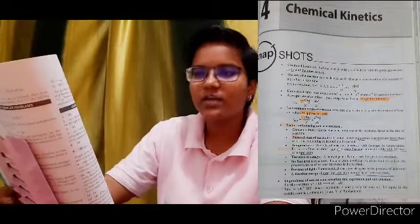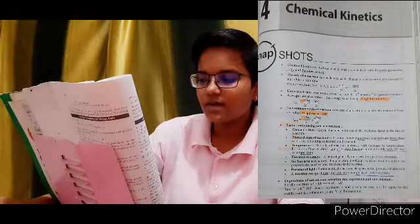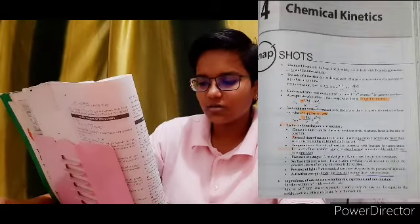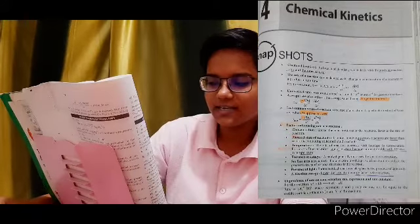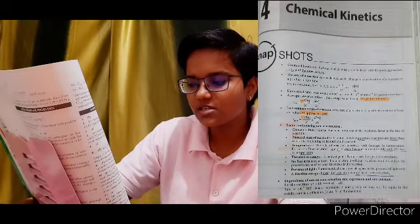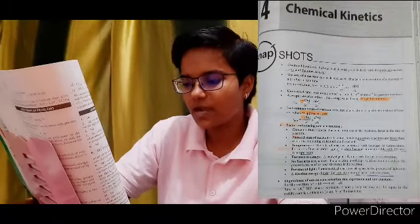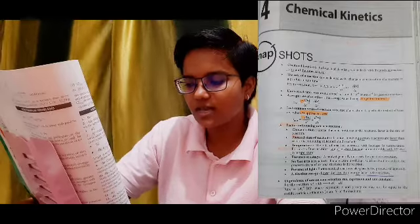Factors influencing rate of reaction: Concentration — greater the concentration of reactants, faster is the rate. Physical state of reactants — reactions involving gaseous reactants are faster than those with solids and liquids. Temperature — the rate increases with rise in temperature; for most reactions, the rate nearly doubles with a 10°C rise. Presence of catalyst — a catalyst generally increases the speed of reaction. Surface area of reactants — for reactions involving a solid reactant or catalyst, greater surface area means faster reaction.